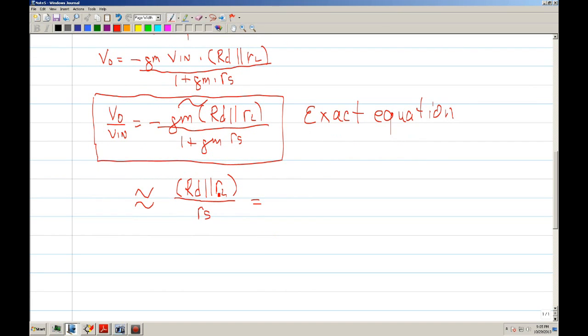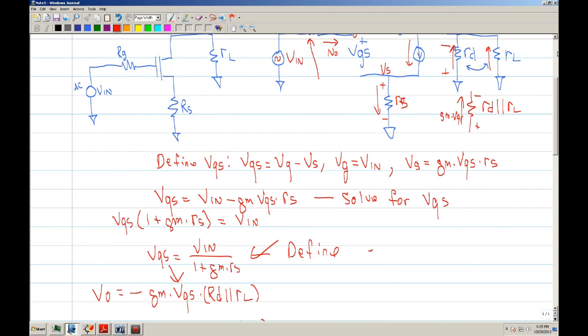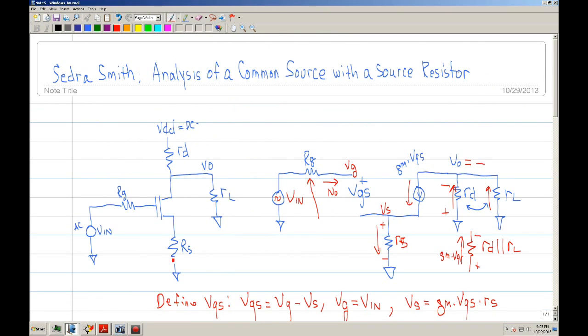And let's assume you didn't have an RL, you just had a drain resistor. Well then the gain would be RD over RS. So these two equations are approximation. And this one should be pretty easy to kind of calculate. All you do is look at what RD is and divide by RS and you got it. Or if you have an RL, just find out what the two combination is, what's the parallel combination divided by RS, and you got your gain.